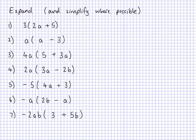So for the first one, we always use the distributive law. The thing on the outside multiplies to each thing inside. So this is identically equal to: 3 times 2a gives us 6a. And then 3 times 5 — remember 3 needs to be multiplied to each thing — so 3 times positive 5 is positive 15.